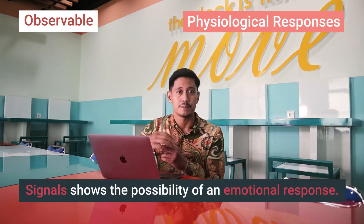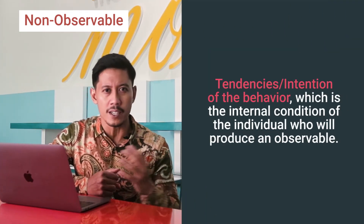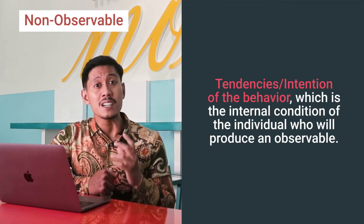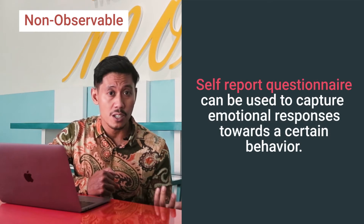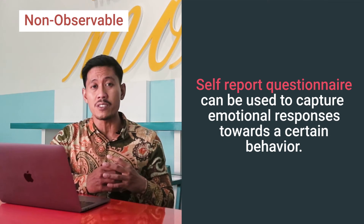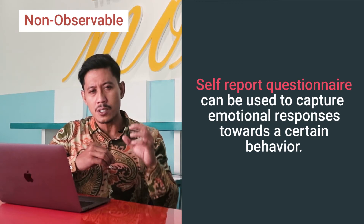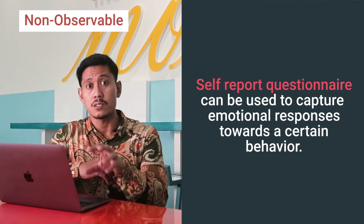An example of a non-observable variable is intention — the intention to behave in a certain way. One measurement technique you can apply is using a self-report questionnaire. By asking subjects what they want to do, what they feel, or what they feel they want to do, you can capture the emotional response towards certain behaviors.